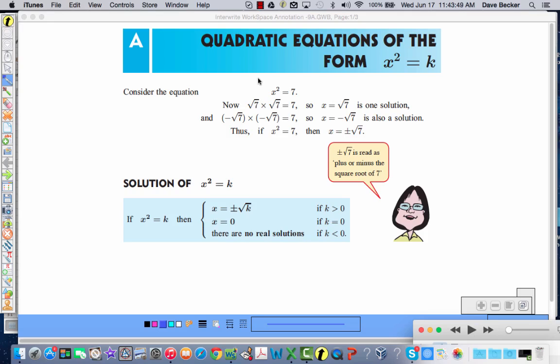Quick consideration here. If I have the equation that x squared is equal to 7, we know that root 7 times root 7 is equal to 7, so x is equal to the square root of 7. But there's another solution, isn't there, because we know that a negative multiplied by a negative is equal to a positive. So we can say that if x squared is equal to 7, then x is equal to plus or minus root 7.